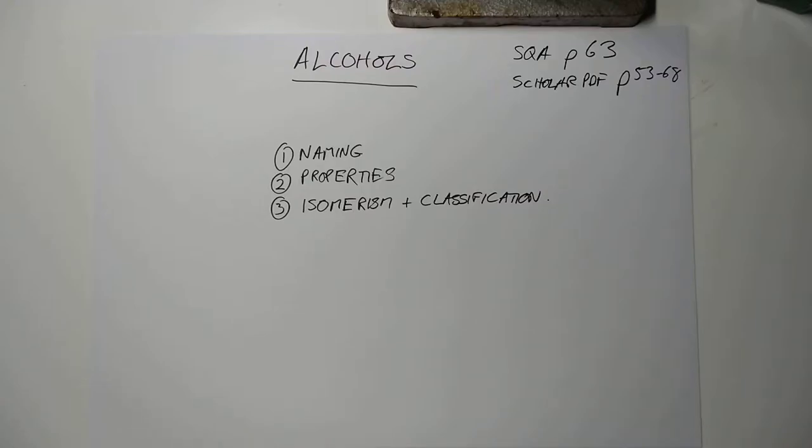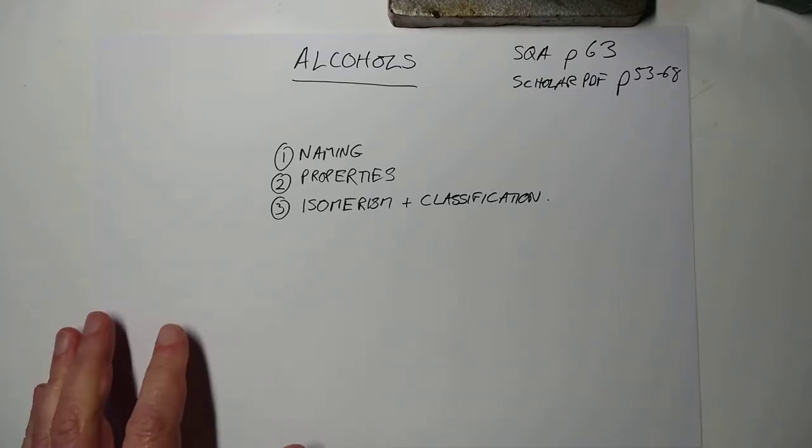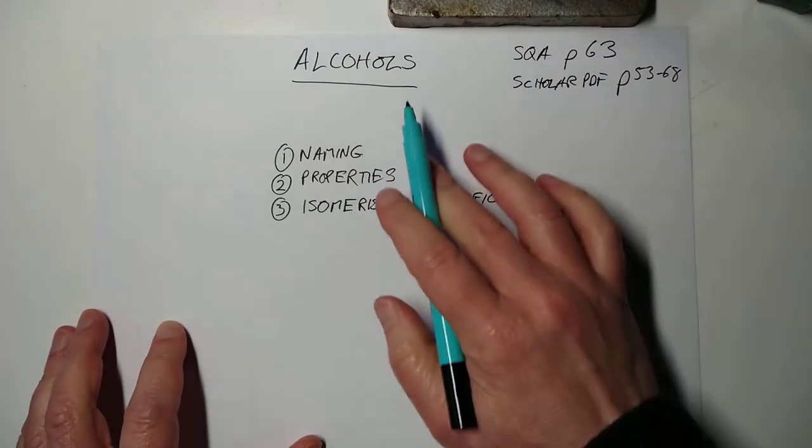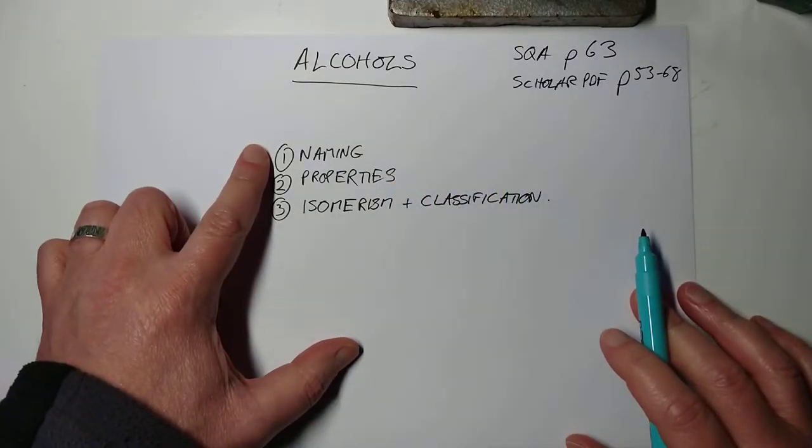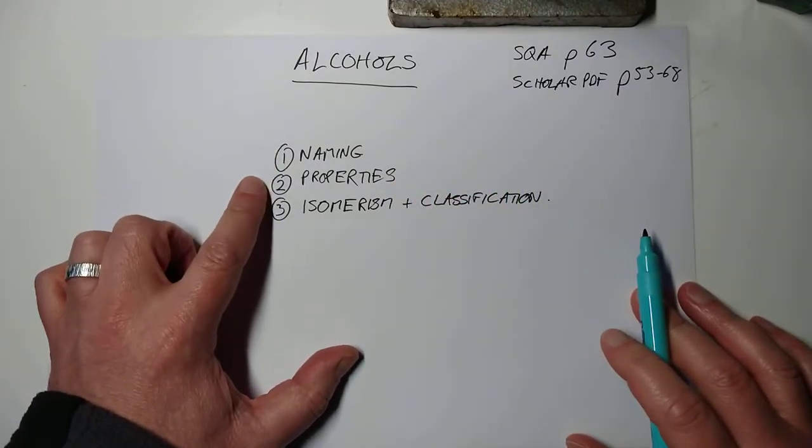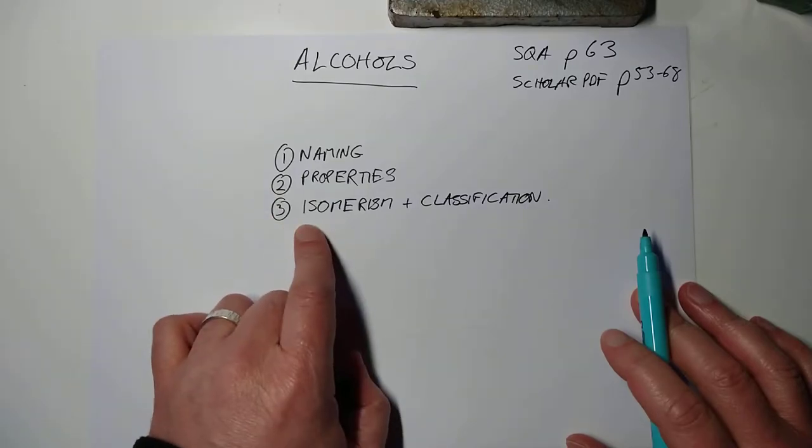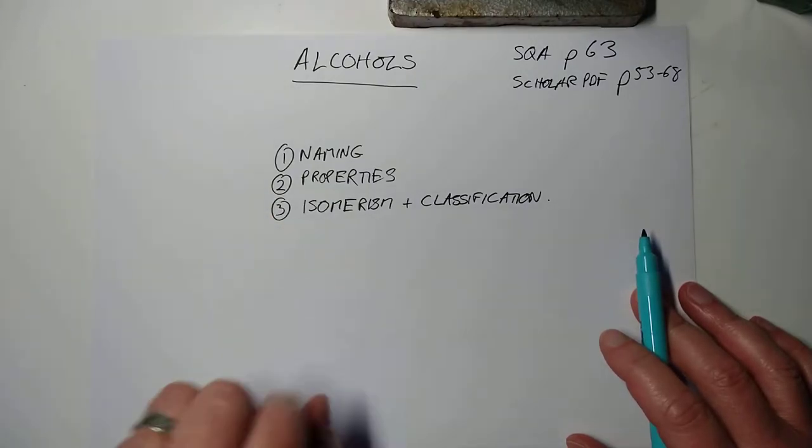Good afternoon folks. Welcome back to Higher Chemistry. This is going to be a super short video, I hope, on the alcohol family, the homologous series called the alcohols. You're required to know how to name them properly, you're required to know their properties, and you're required to know about isomerism and classification of alcohols into three different types.